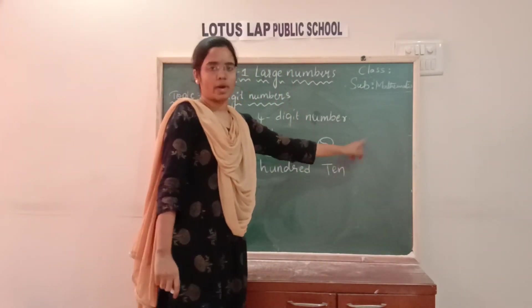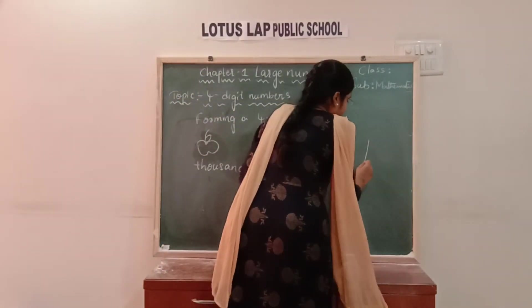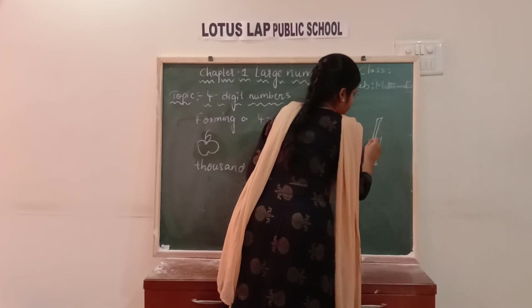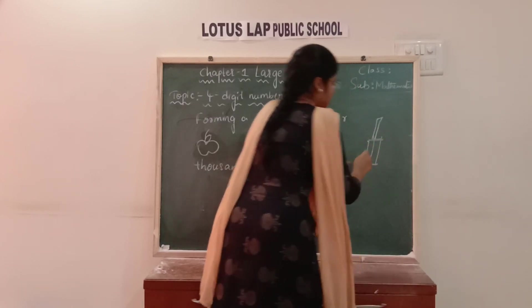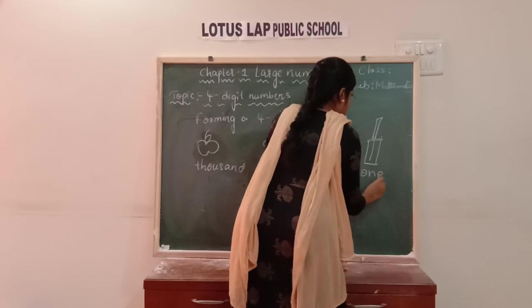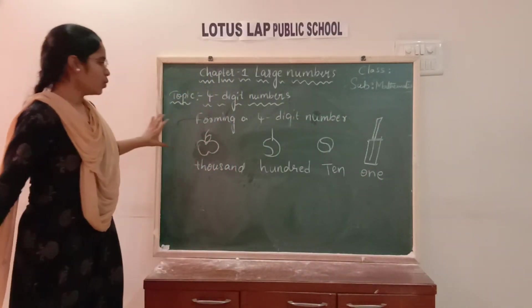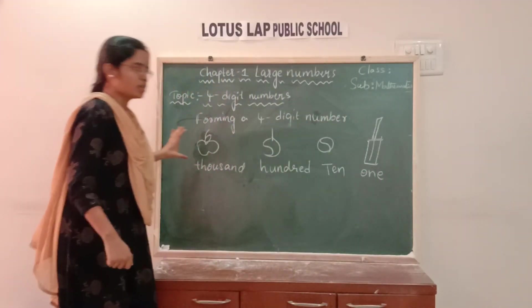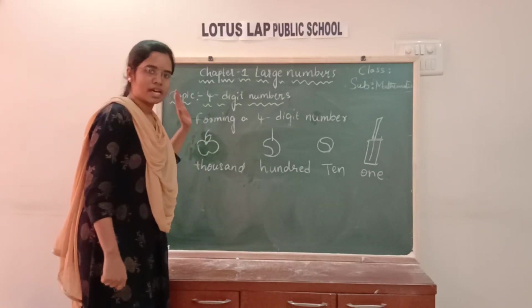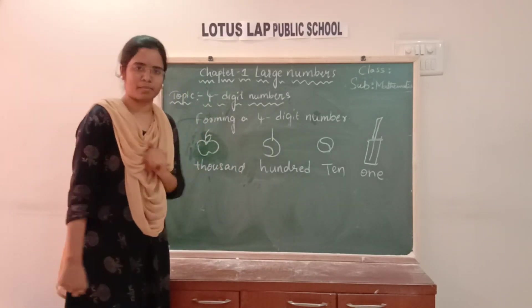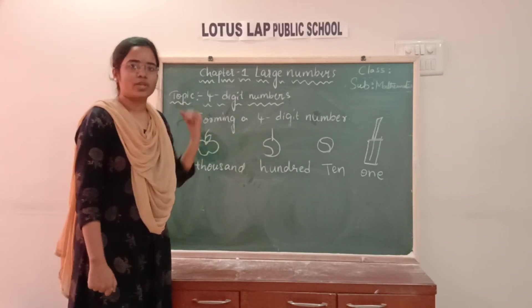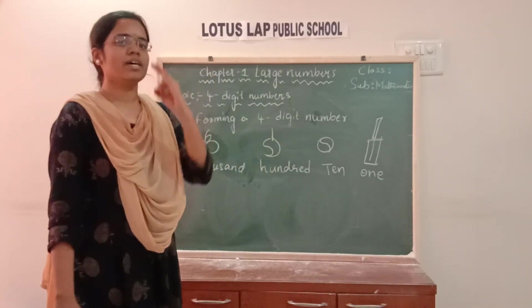This is thousand, this is hundred, this is ten. Now one more — I am taking one bat. You will be playing with bat and ball, right? For this bat, I am considering it as one. Now, based on these pictures, you need to answer me and form a 4-digit number. You need to count the pictures and tell me the number.